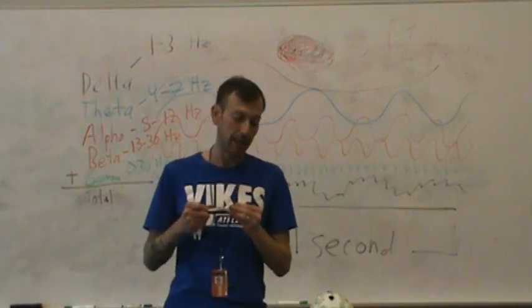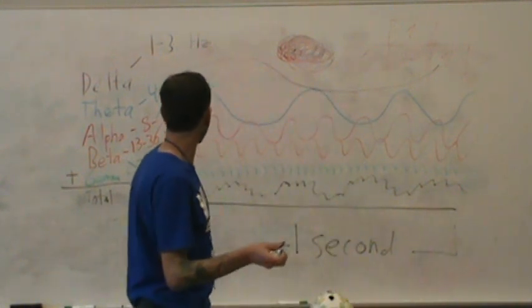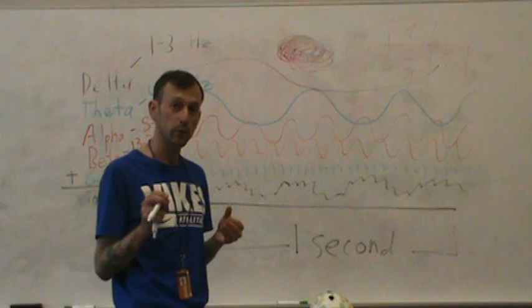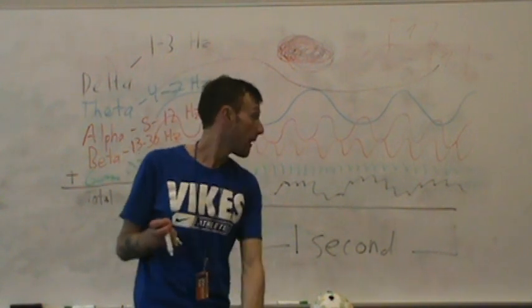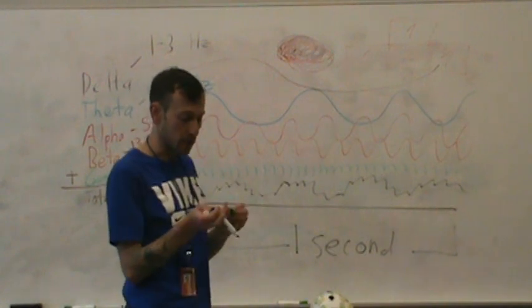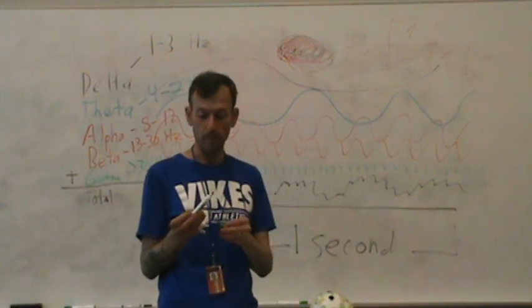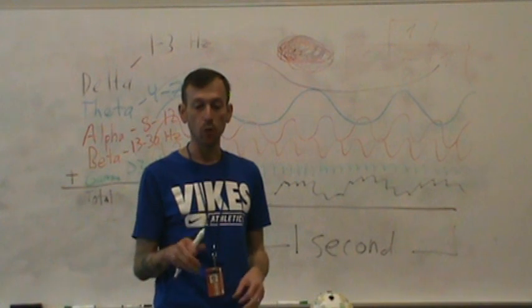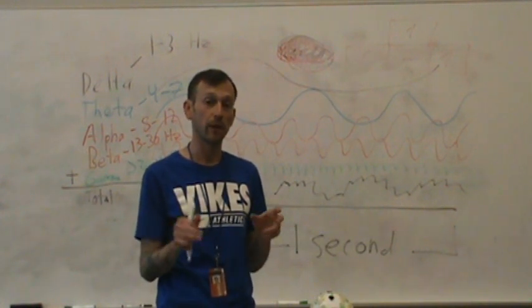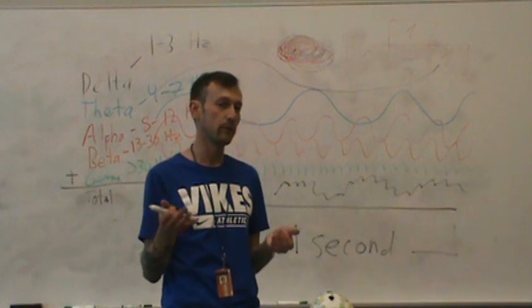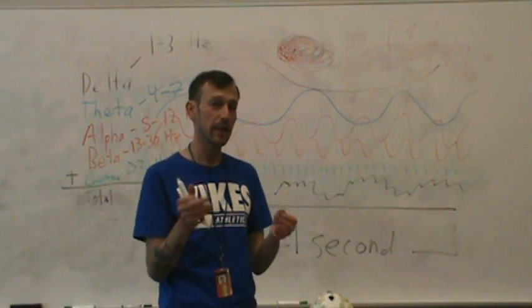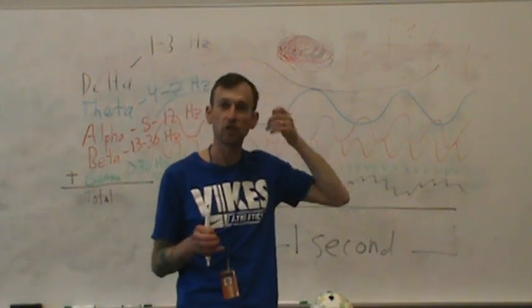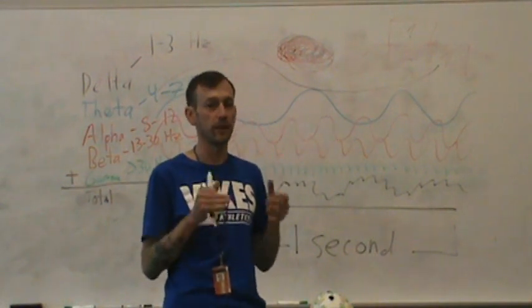So what does each of the bandwidths mean, then? Well, beginning with delta, delta is typically associated with states of drowsiness. Theta is typically associated with cognitive control. So in theta activity, what you might see is if someone makes a mistake while they're doing an experiment on the computer, while they're doing a task on the computer for the researcher, if the participant makes a mistake, oftentimes you'll see a lot of theta activity, because they'll try to pay more attention or control their thinking a little bit more so they don't mess up in the future.